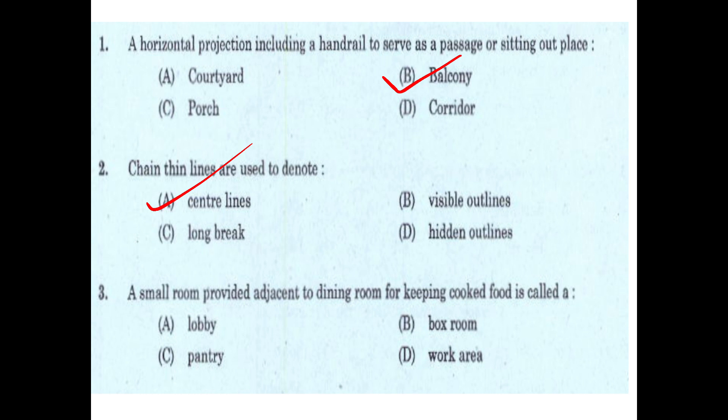Third question: a small room provided adjacent to the dining room for keeping cooked food is called — lobby, box room, pantry, or work area. The answer is pantry. A small room provided adjacent to the dining room for keeping cooked food is called a pantry.